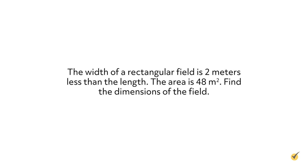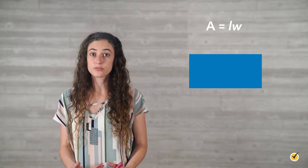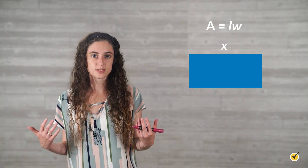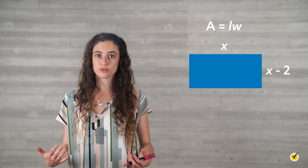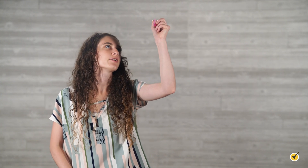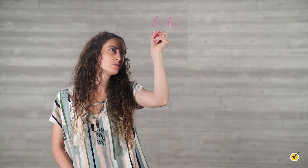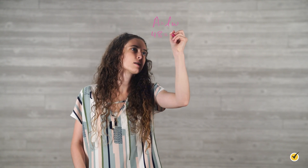Let's take a look at a story problem that we can solve by graphing a quadratic function. The width of a rectangular field is 2 meters less than the length, and the area is 48 meters squared. Find the dimensions of the field. Start with the formula for the area of a rectangle: a equals length times width. Use x to represent length, and x minus 2 to represent width. Substituting, area equals x times x minus 2, and area equals 48.